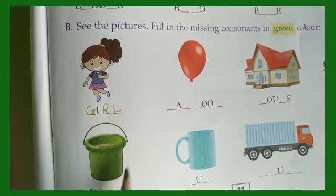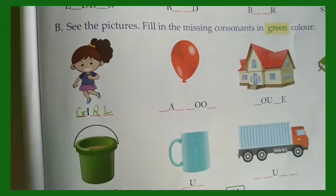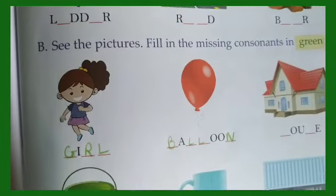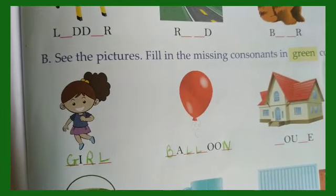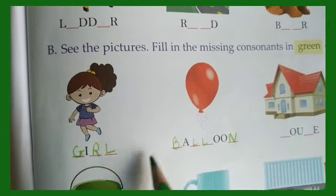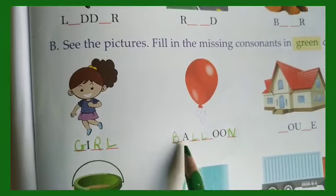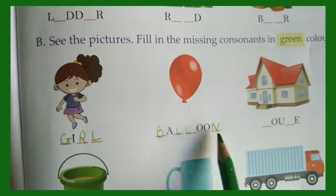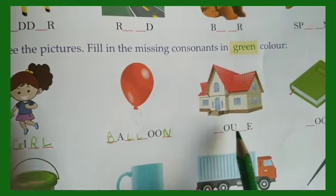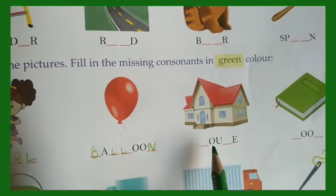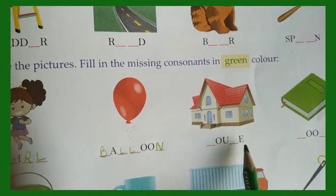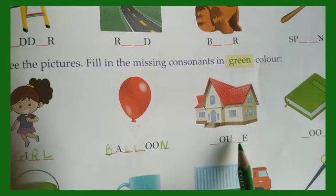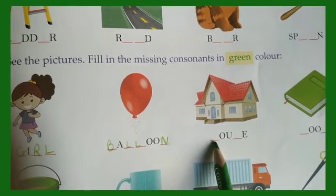The picture is of a balloon. You know the spelling? The spelling is B-A-L-L-O-O-N. O, U, E — these are all vowels. We have to fill in the blanks with consonants.